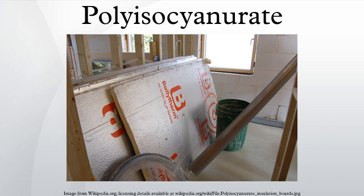Uses: PIR is typically produced as a foam and used as rigid thermal insulation. Its thermal conductivity has a typical value of 0.16 British thermal units per inch per hour per ft² per degree Fahrenheit, depending on the perimeter-to-area ratio. PIR foam panels laminated with pure embossed aluminium foil are used for fabrication of pre-insulated duct that is used for heating, ventilation and air conditioning systems.